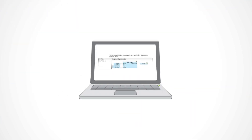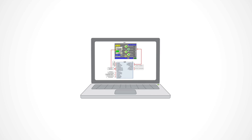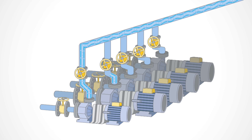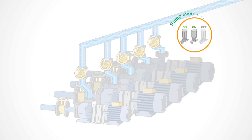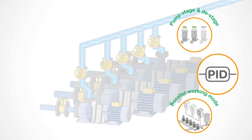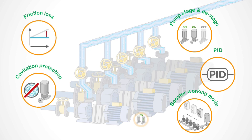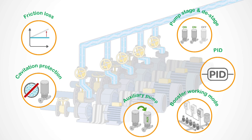And to make sure application programming doesn't slow you down, we've done a lot of it for you and made it available in our Pumping Application Function Block Library, where you will find related functions for Pump Stage and De-Stage, Booster Working Mode, PID, Friction Loss, Cavitation Protection, and Auxiliary Pump.